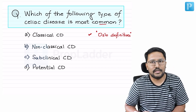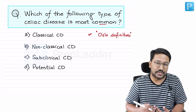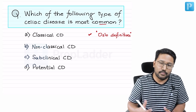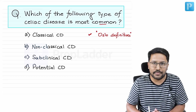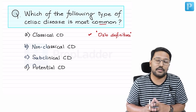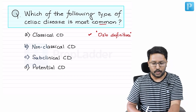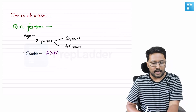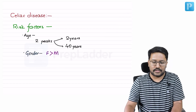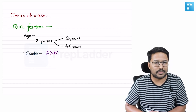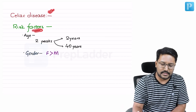Questions are becoming more and more clinical, so the epidemiology of every disease is very important, particularly for those preparing for NEET cases. I will go through important epidemiological points about celiac disease and then address the questions. The risk factors for celiac disease — well, age is a risk factor.